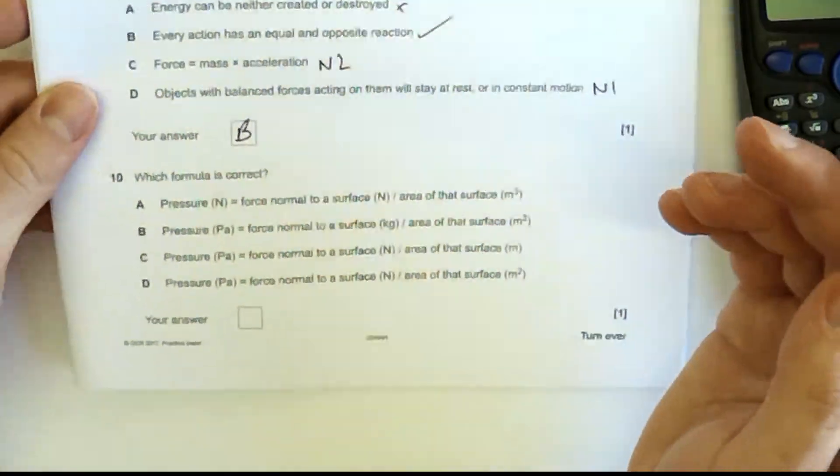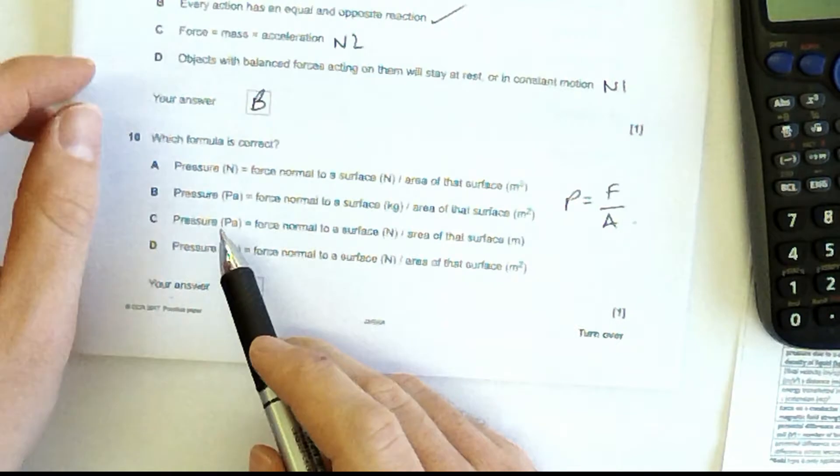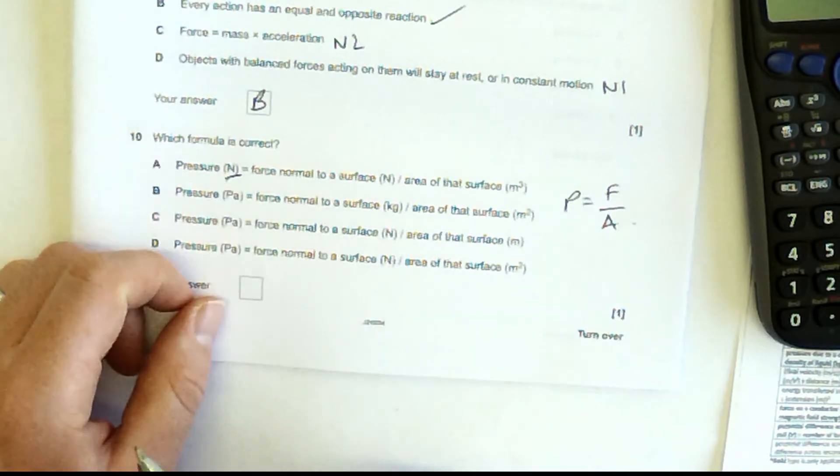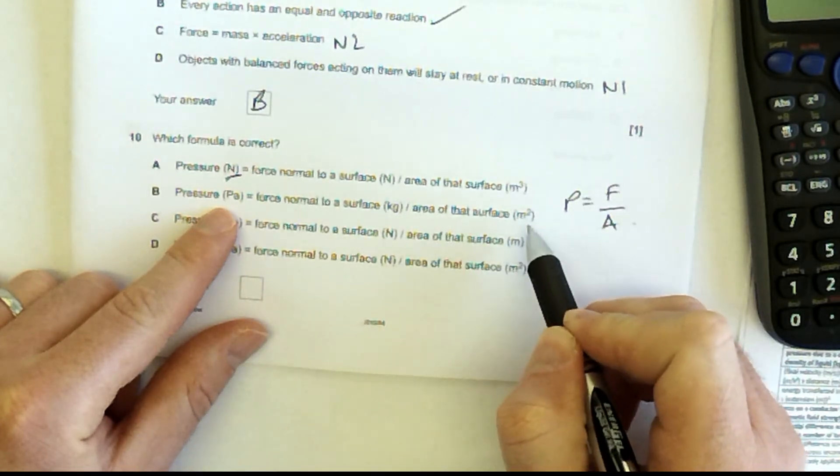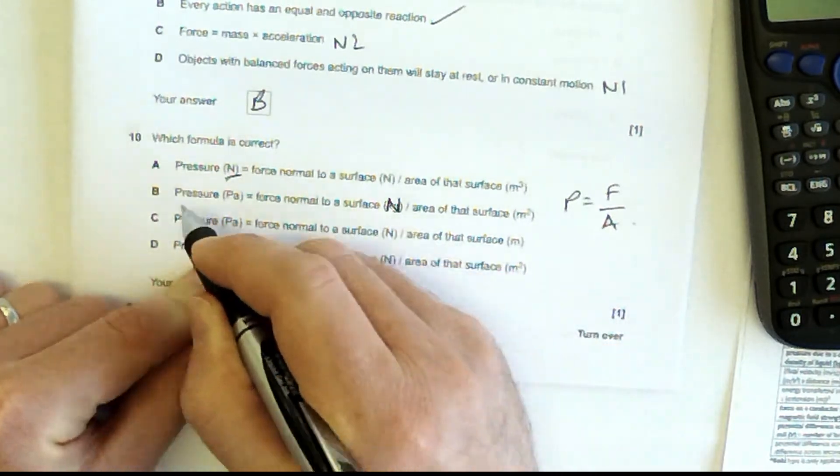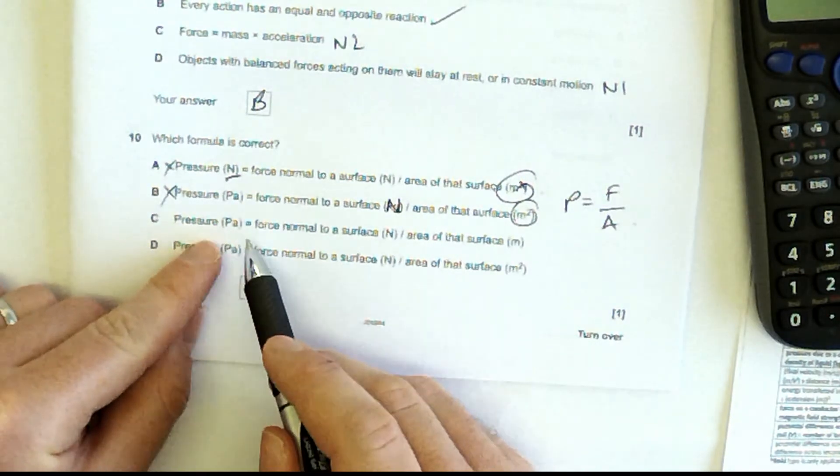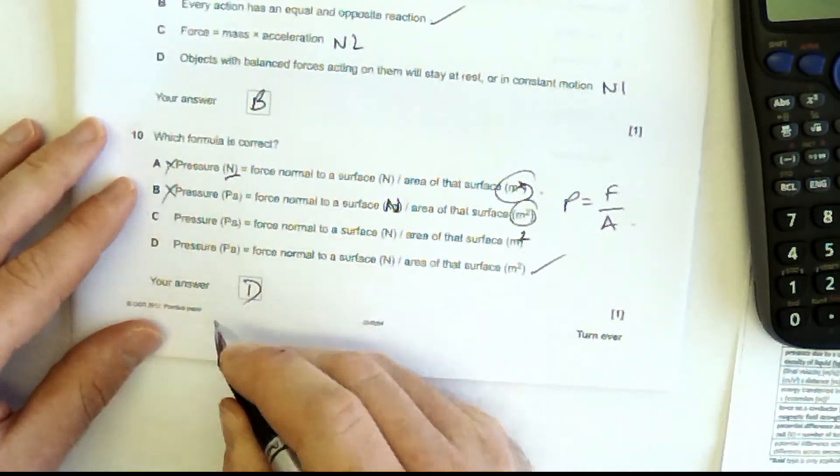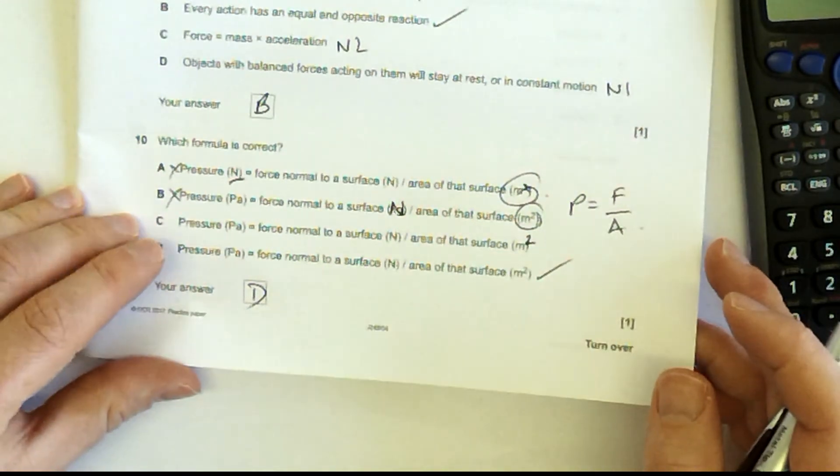Which formula is correct? This is just an equation you need to remember. Pressure is a force normal to the surface over the area of that surface. That's right, but there's something going on there. So it's not going to be that one, is it? Pressure in Pascal is force normal to the surface in kilograms over the area of the surface in meters squared. Well, no, force is in Newtons, not kilograms. So it's not that one. Also, the previous one had meters cubed there. Pressure is force normal to the surface over the area of the surface that's missing the squared. So it's got to be D. The units are all correct. They're all the same equation, but the units are only correct in D.